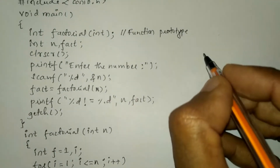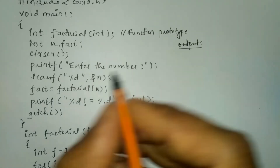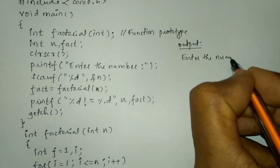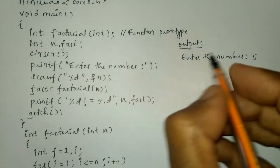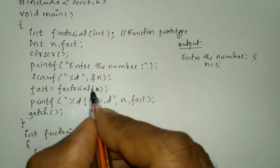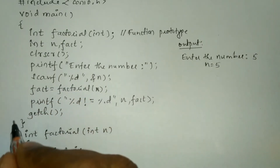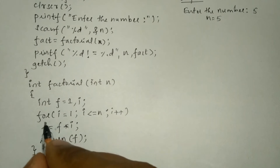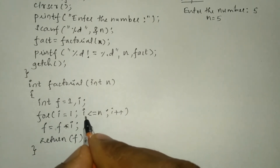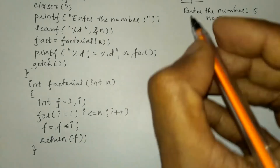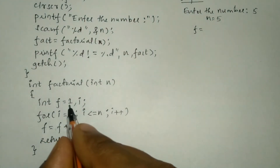Let us trace through an example. When we compile and run the program it asks the user to enter the number. For example, I enter 5, so n is equated with value 5. The function call fact equals factorial of n — factorial of 5 — causes control to jump from the function call to the function definition and execute all the statements. For i equal to 1 and n equal to 5, 1 is less than or equal to 5, so the condition is true and the expression is evaluated. f is 1 into i which is 1, so 1 into 1 equals 1.